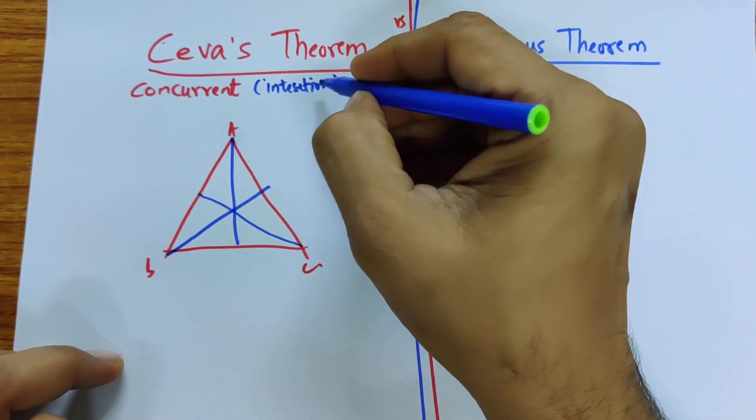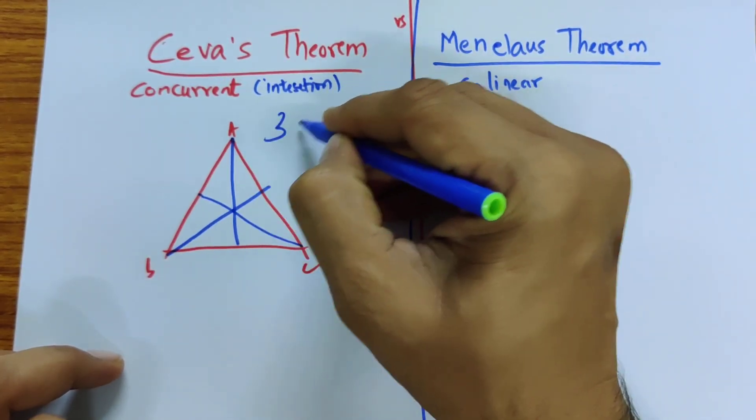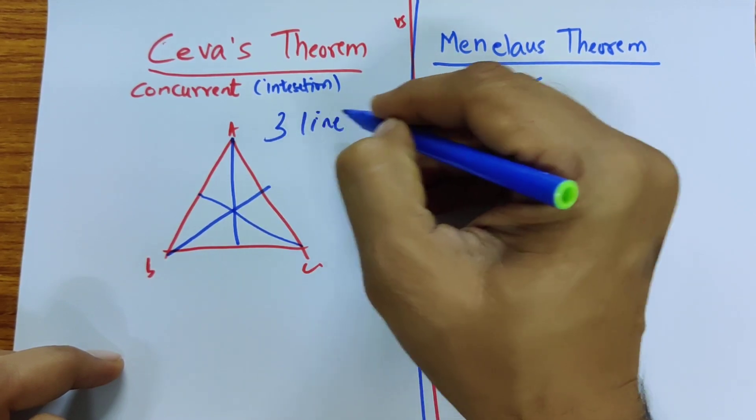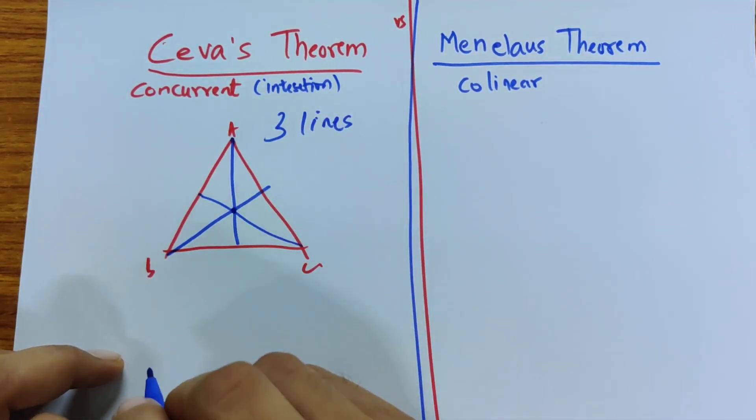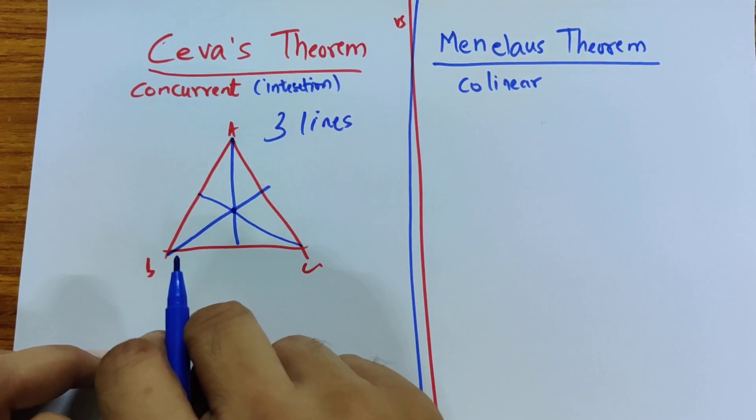Okay, intersection. Three lines. This is not one line, it's three lines. And when do the three lines intersect at the same point? That's what Ceva's theorem is about.